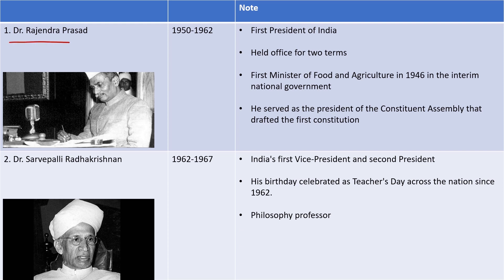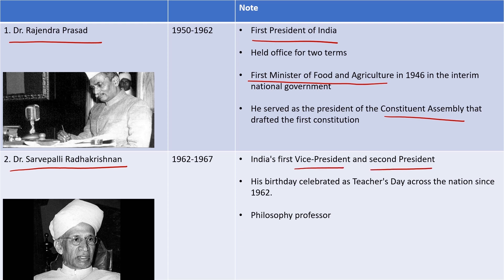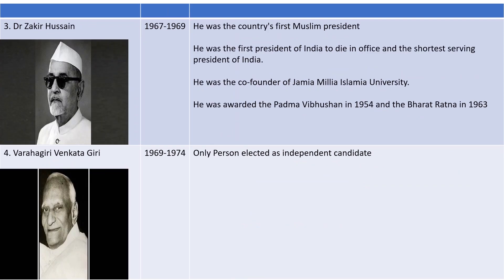List of Presidents of India: Dr. Rajendra Prasad was the First President of India and also the First Minister of Food and Agriculture. Dr. Sarvepalli Radhakrishnan was the First Vice President and Second President of India — a philosophy professor whose birthday, September 5, is celebrated as Teachers' Day. Dr. Zakir Husain was the First Muslim President of India, and also the shortest-serving president; he was the Vice Chancellor of Jamia Millia Islamia University.